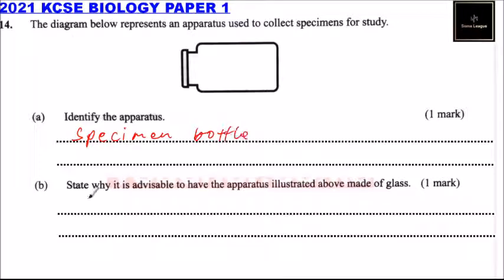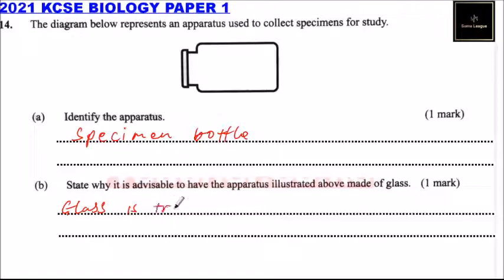Part B: State why it is advisable to have the apparatus restricted above made of glass. We can say glass is transparent.